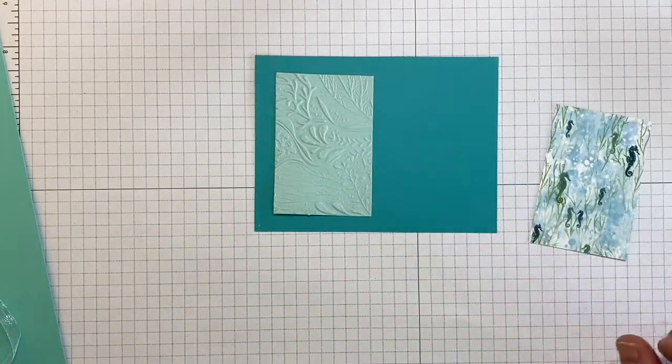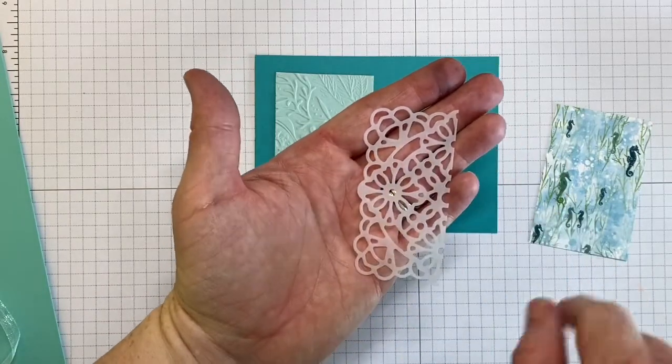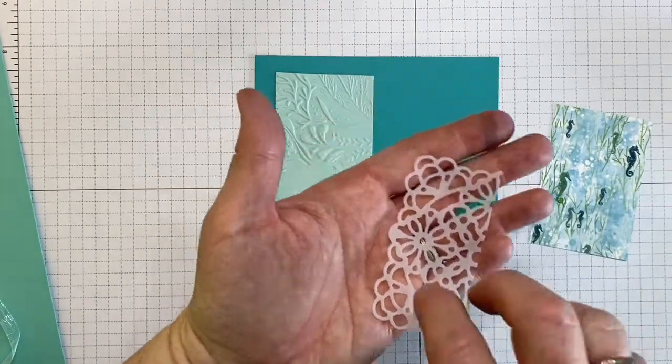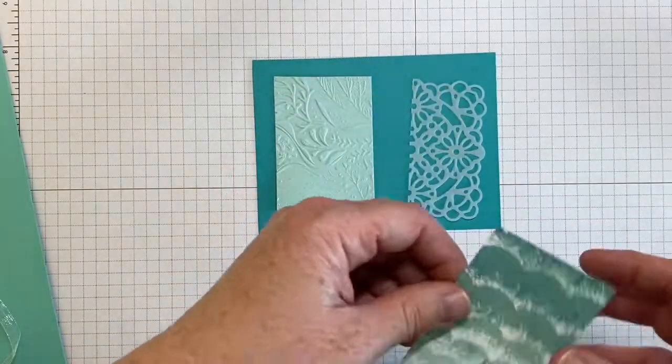Before you stick down your designer series paper, I have just brought in a piece of the vellum square doily and I cut it in half. And now we're going to create texture for our little background.